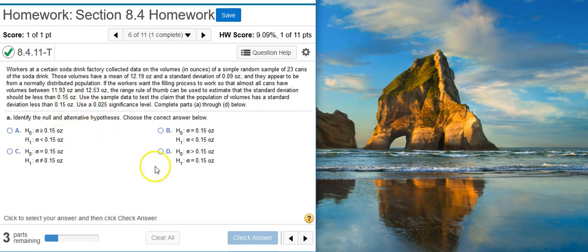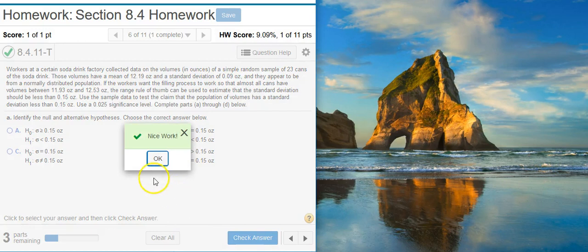So our sigma, which is the standard deviation for the population, is going to be less than 0.15 ounces. We want answer option B. Nice work!